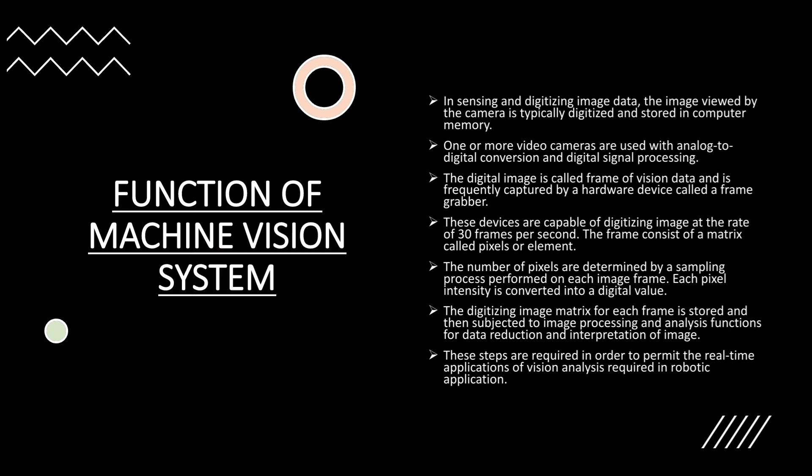The frame consists of a matrix called pixels or elements. The number of pixels is determined by a sampling process performed on each image frame. Each pixel's intensity is converted into a digital value. The digitized image matrix for each frame is stored and then subjected to image processing and analysis functions.